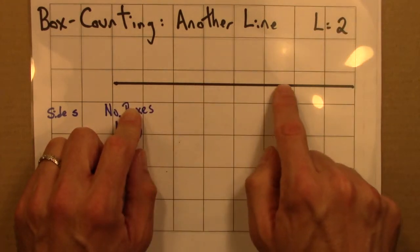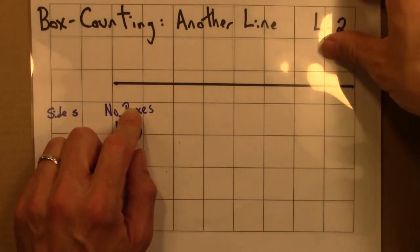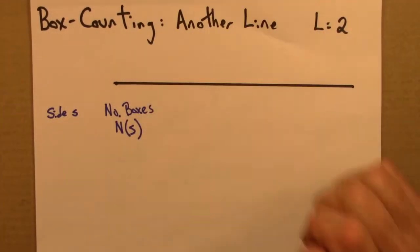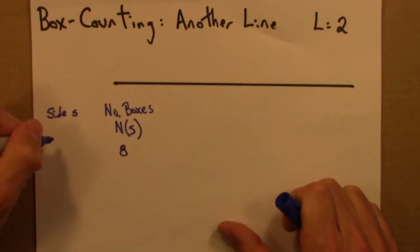1, 2, 3, 4, 5, 6, 7, 8. So it takes 8 boxes if the side is a quarter.